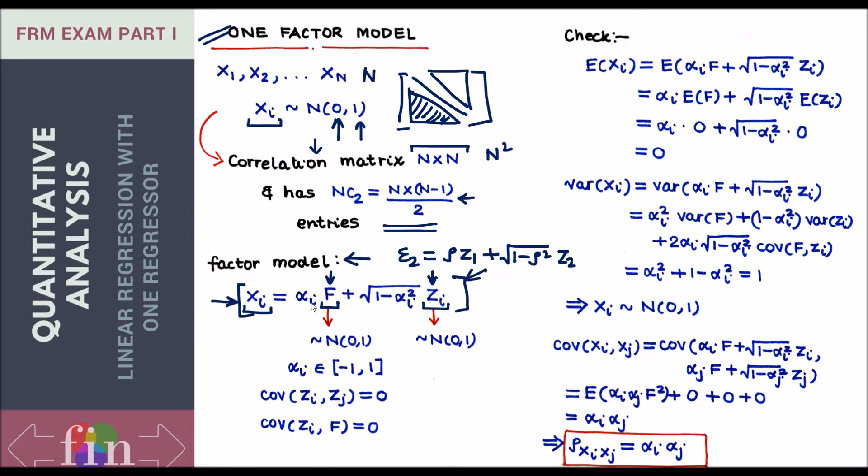So what I am saying here is that the returns of this asset are driven by some component of returns which come from a common factor plus a component of returns which come from a factor which is purely associated with xi. This would actually become more clear when we do portfolio theory, but till then let's just understand this model purely from a statistics viewpoint in terms of how it helps us reduce our burden about data required.